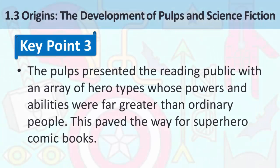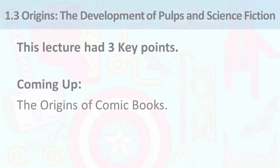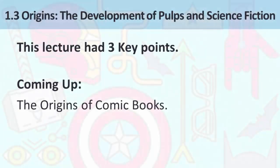So, here's key point three: the pulps presented the reading public with an array of hero types whose powers and abilities were far greater than ordinary people. They paved the way for superhero comic books. This is the end of this lecture. This lecture had three key points. Review your notes and go back over the video lesson to ensure you have those three key points noted. Coming up: lesson 1.4, The Origin of Comic Books.